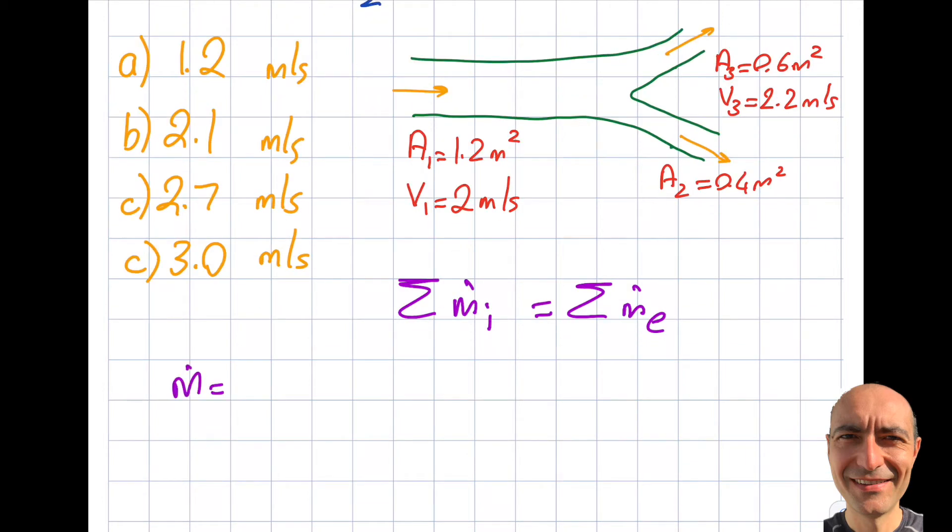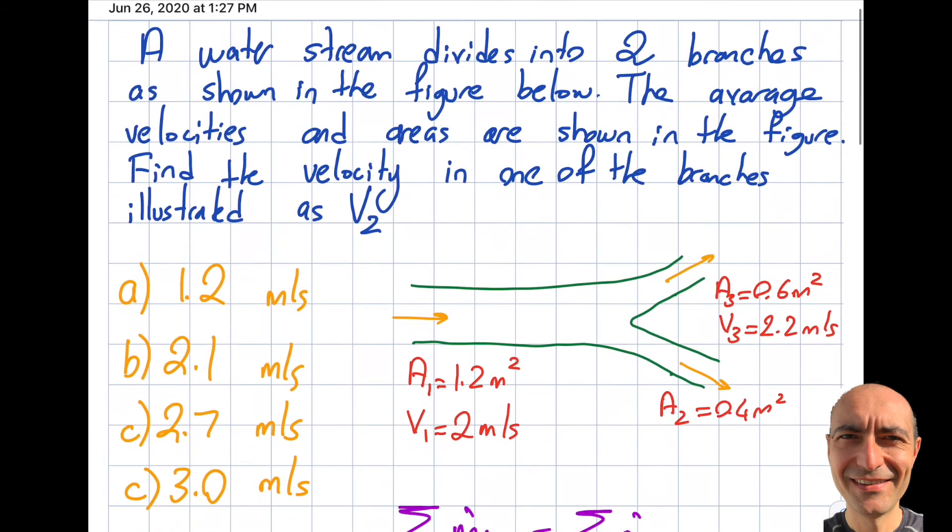As you know, this m dot was ρVA. Also, we discussed this: if this is constant density, and this is a good assumption for water, incompressible.